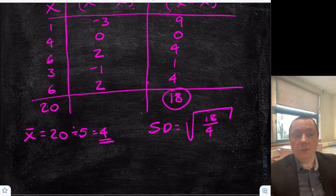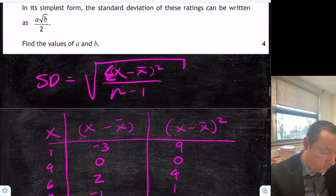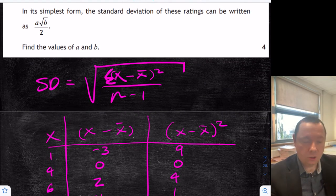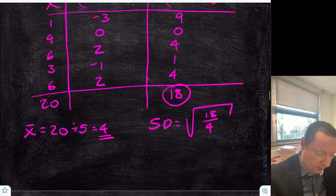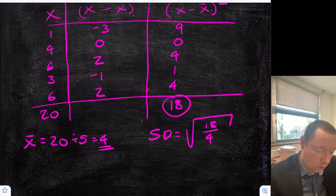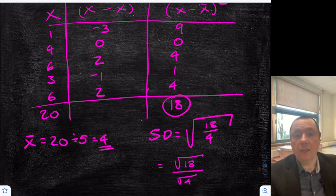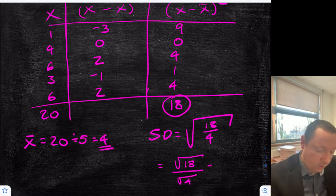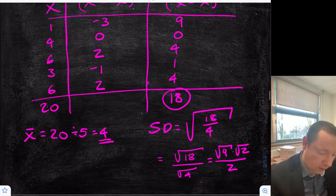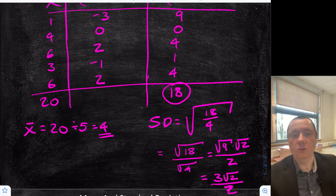Now we need to express it in the form a root b over 2. We can separate the fraction into two square roots: square root of 18 over square root of 4. I need two numbers that multiply to make 18, one of which is a square number — that's 9 times 2. And the square root of 4 is 2. So square root of 9 is 3, root 2 I can't simplify, all over 2. Final answer: 3 root 2 over 2.